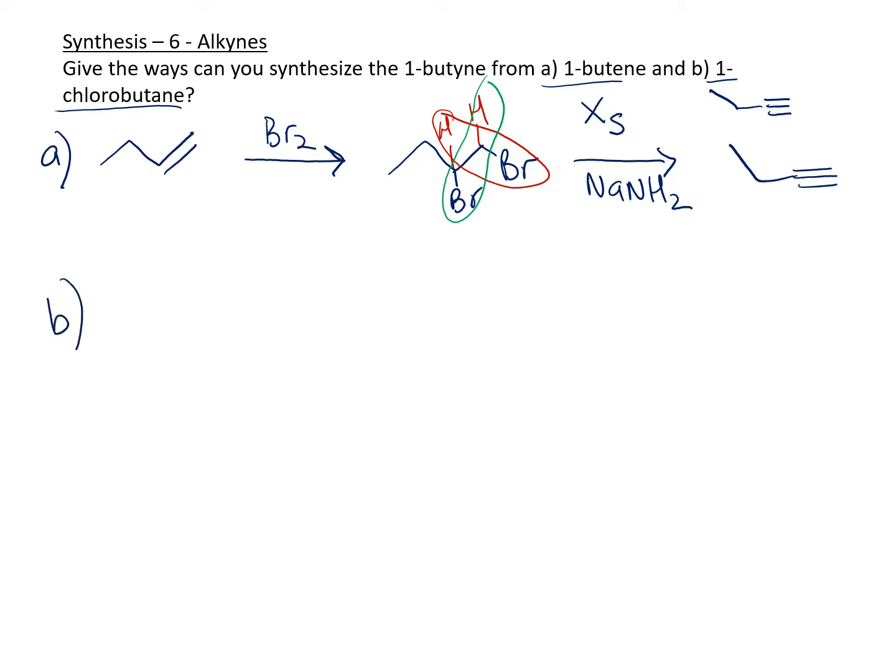If you had 1-chlorobutane, the good thing is that you're making four carbons from a four carbon. We haven't added or subtracted any carbons here. That's a good thing - it kind of alleviates some of the problems for us.